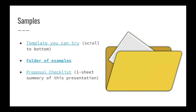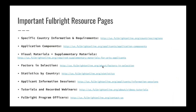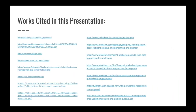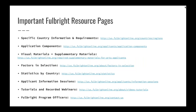Regarding samples — a frequent request: the first link is a template you can try, scrolling to the bottom for structure, because people struggle without structure and this lays out one option of many. The folder of examples in bold gives you access to a whole bunch of PDFs and documents of past proposals, and then a proposal checklist which is essentially a one-sheet summary of this presentation. We've got those familiar resource page links and works cited for this presentation. I'll send out this link shortly after our presentation.